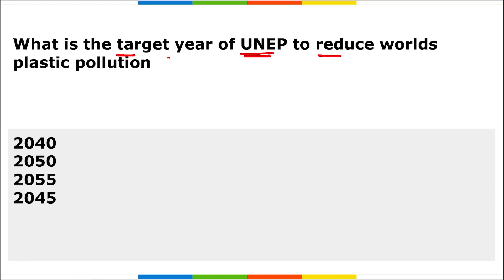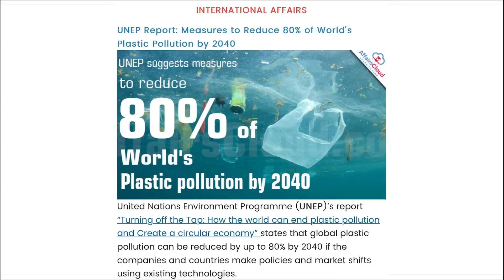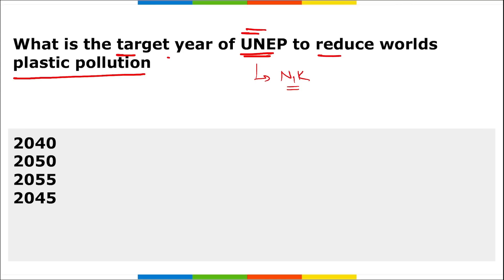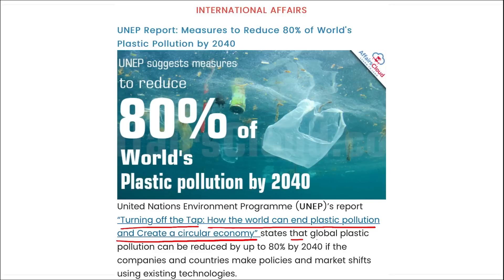What is the target year set by UNEP to reduce the world's plastic pollution? UNEP — United Nations Environment Programme, headquartered in Nairobi, Kenya — launched a report titled 'Turning Off the Tap: How the World Can End Plastic Pollution and Create a Circular Economy.' The report states that global plastic pollution can be reduced by up to 80% by the year 2040 if companies and countries make policy shifts using existing technologies.